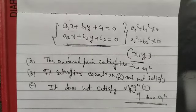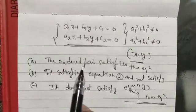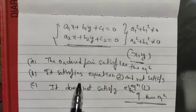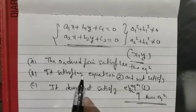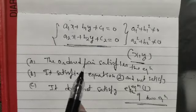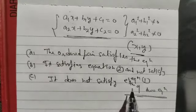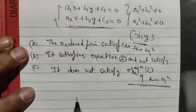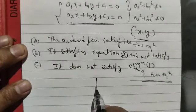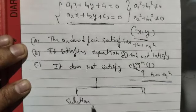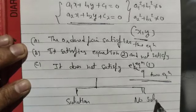What we discuss here is the ordered pair. First, the ordered pair satisfies both equations. Second condition: it satisfies equation 2 only, not equation 1, or it satisfies equation 1 but not equation 2. The third one is that it does not satisfy either equation. We conclude that either it has a solution or it has no solution.